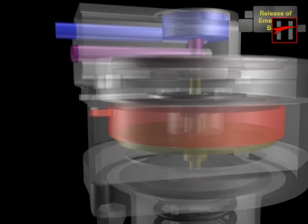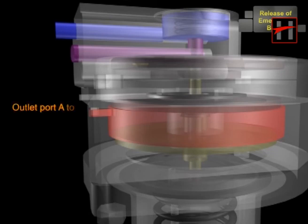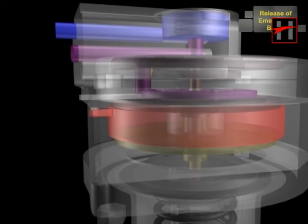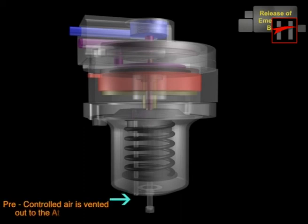Due to this, the connection between the inlet port and the outlet port closes and the connection between the outlet port A to exhaust R is open. Hence, the pre-controlled air is vented out to the atmosphere.